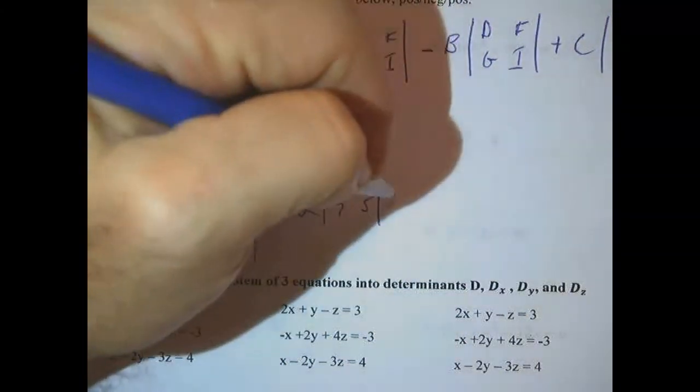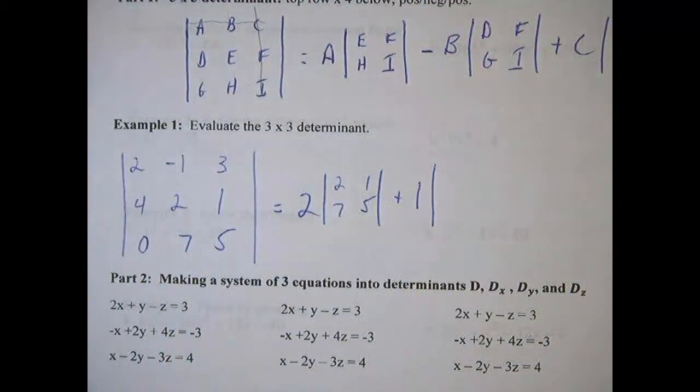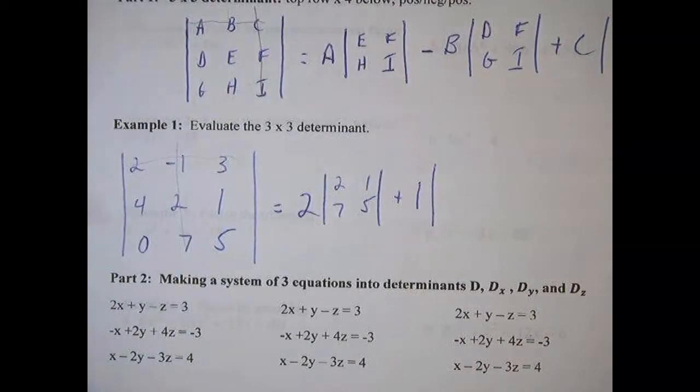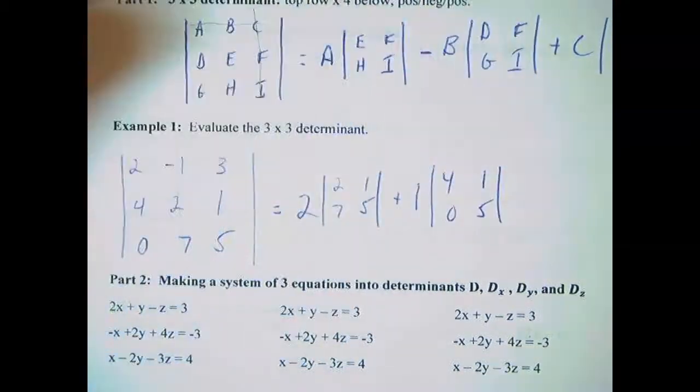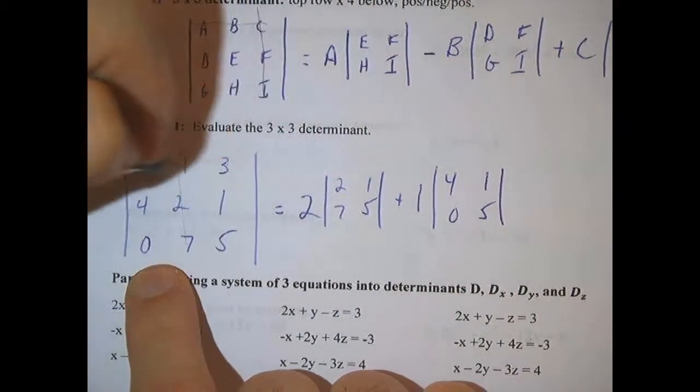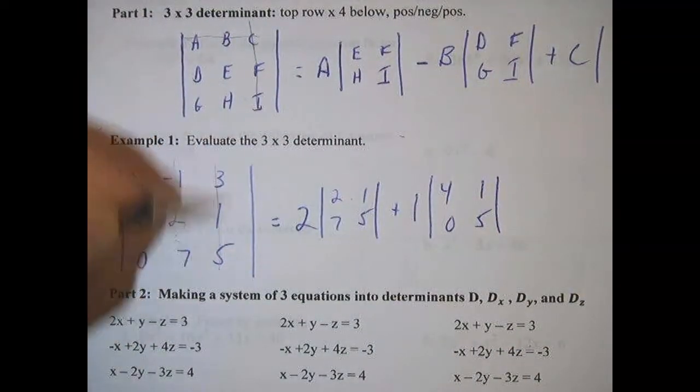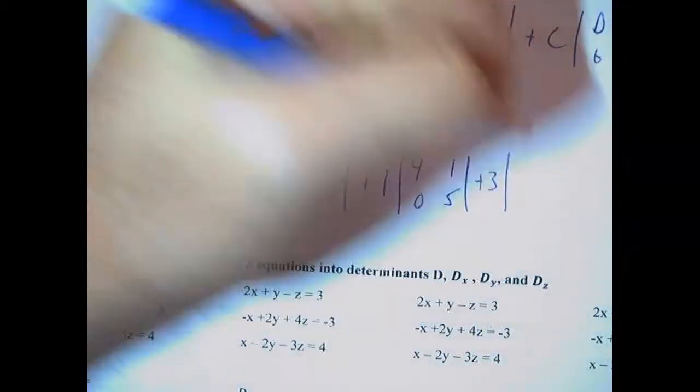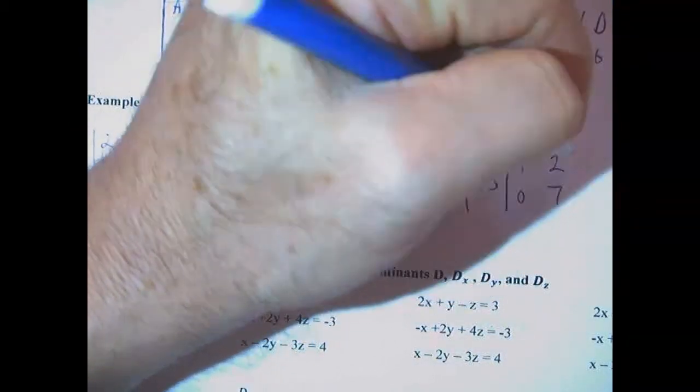Minus a negative 1. So that's actually plus 1 times the determinant that's left over if I strike through these. So I get 4, 0, 1, 5. And then the 3 for the last one. So we just do one more here. Crossing out the 3 and then that's our 2 by 2 determinant, 4, 0, 2, 7. So this is plus 3 times 4, 0, 2, 7.